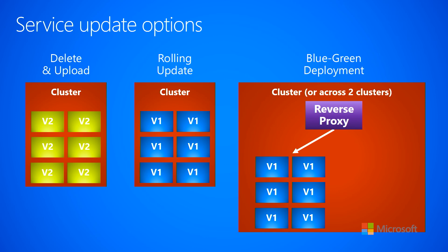On the other hand, if these services are behind a message queue, then it really isn't a problem. You could bring down all six of them so messages are queued up and the queue length is growing, but those messages are not being dropped. As long as you deploy version two before those messages' time-to-live expires in the queue, they will eventually come up and start pulling messages off the queue. So you have to think about how these services interact with other services to know how useful this option is.